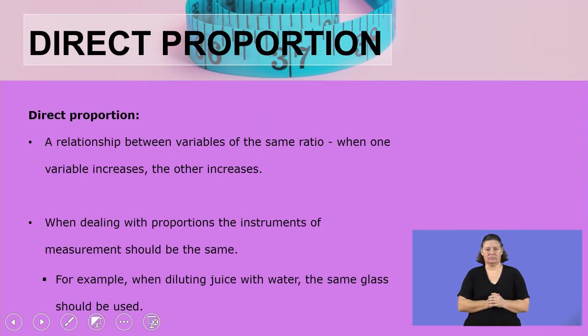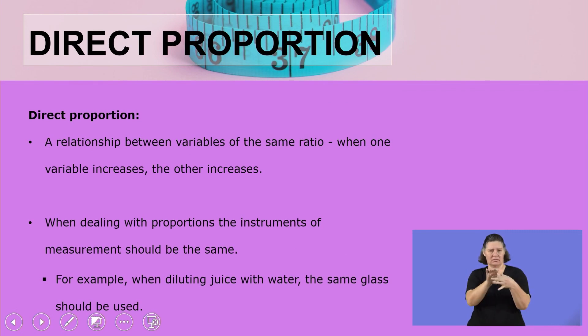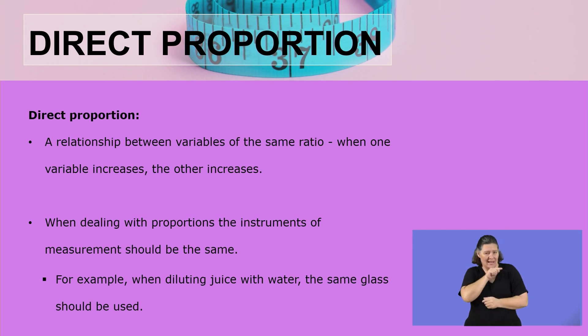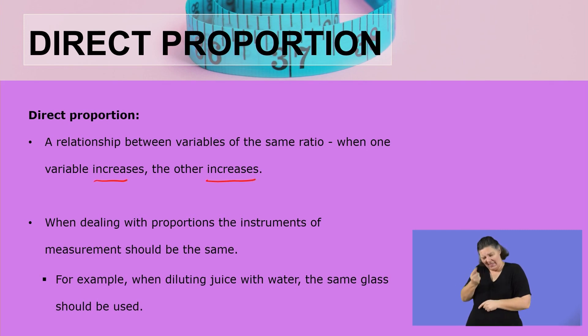Welcome back. Let us continue with the first section: direct proportion. What is direct proportion? Direct proportion is the relationship between variables of the same ratio whereby when one variable increases, the other one increases as well. When one variable increases, it causes the other one to increase — just like the price of oil and the price of food. They are directly proportional.